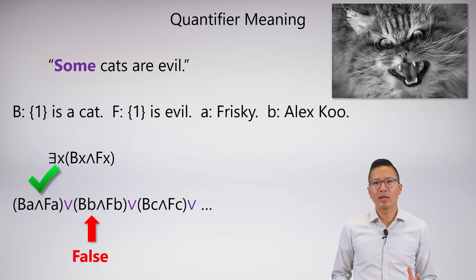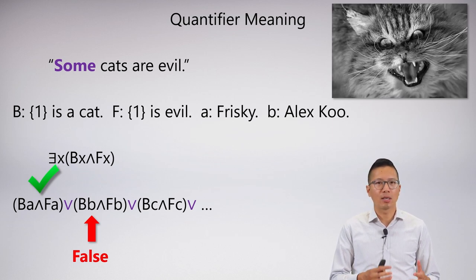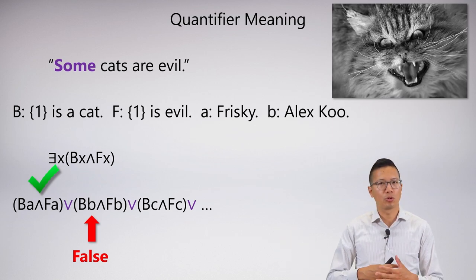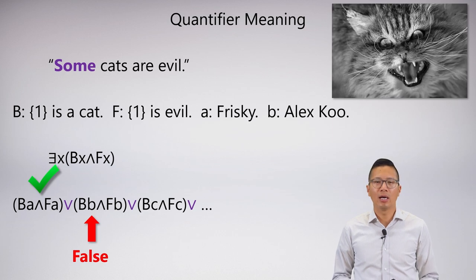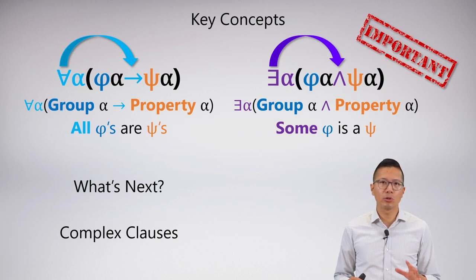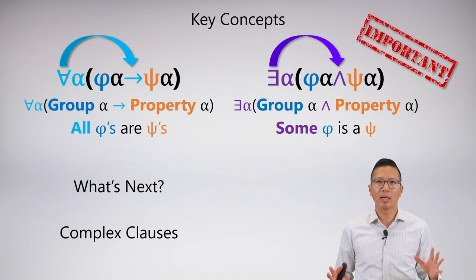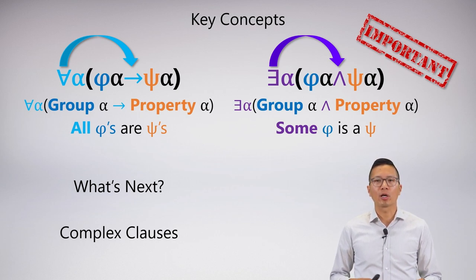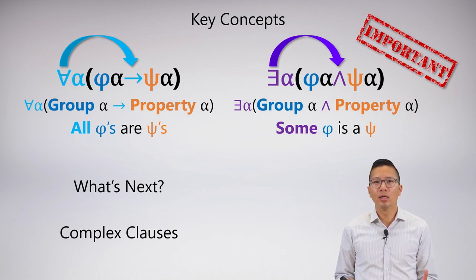This is a nice way of thinking about what the quantifiers mean. The universal means that every single conditional will be true — it's true under every substitution instance. And the existential means at least one. The key concepts in this video are pretty straightforward. You must know your canonical forms. Next, we're going to look at complex clauses and sophisticated symbolization, and we're going to use these canonical forms over and over again.